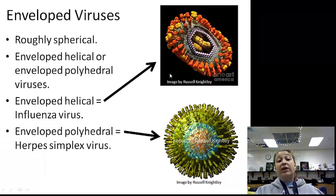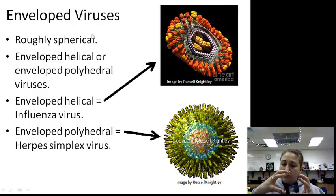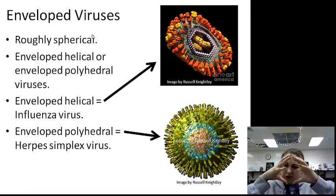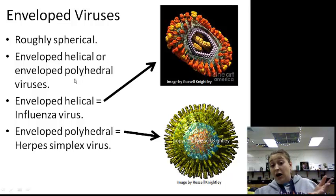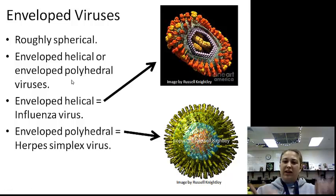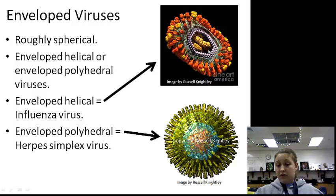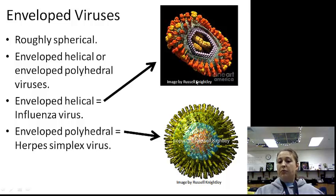Next we have our enveloped virus — it's roughly spherical, but there are two types: an enveloped helical virus or an enveloped polyhedral virus. Basically we took the other two shapes and put an envelope around them. So we've got influenza, where we see the envelope around a helical capsid, and here we've got an enveloped polyhedral — our herpes simplex virus surrounded by the envelope.